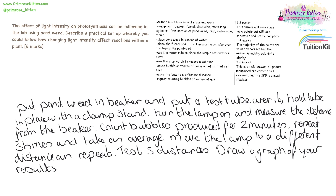This is what my student wrote — and it's not a massive answer, which is fine because this is science. 'Put pondweed in a beaker and put a test tube over it. Hold the tube in place with a clamp stand. Turn the lamp on and measure the distance from the beaker. Count bubbles produced for two minutes. Repeat three times and take an average. Move the lamp to a different distance. Repeat. Test five different distances. Draw a graph of your results.'